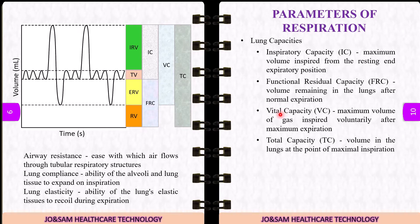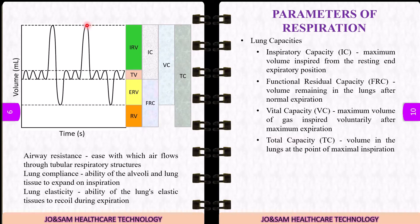Vital capacity is the maximum volume of gas inspired voluntarily after maximum expiration. It equals ERV plus TV plus IRV. Total capacity is the total volume in the lungs after a maximum inspiration, equal to IRV plus TV plus ERV plus RV.